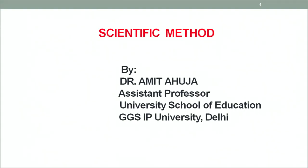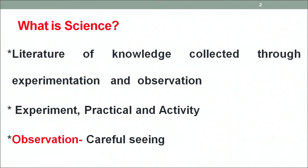Today we are going to deliberate upon scientific method, or a way of interacting with things in a scientific manner. First of all, it becomes imperative to dwell on what is science, what is the nature of science. Science is a literature of knowledge that is collected through experimentation and observation. These two basic notions — experimentation and observation — differentiate sciences from other fields of knowledge like social sciences, languages, and mathematics.